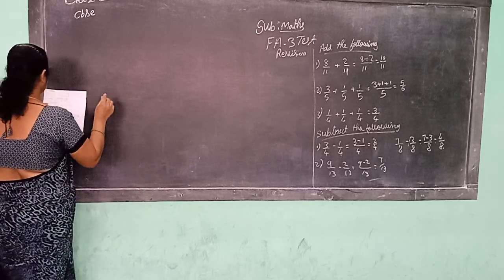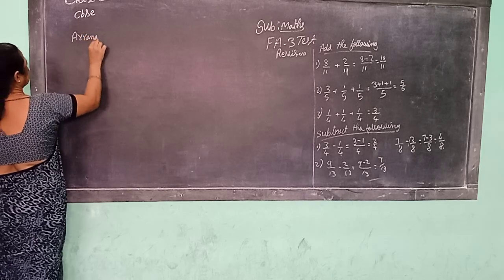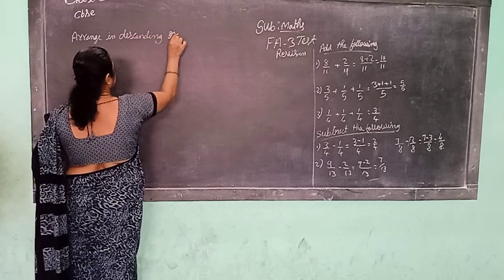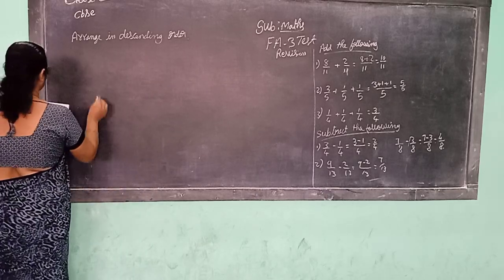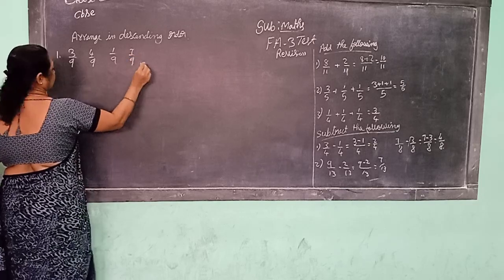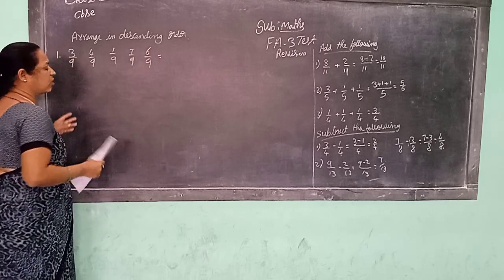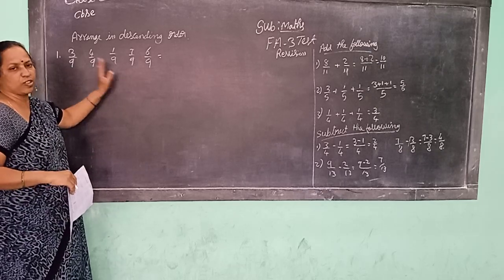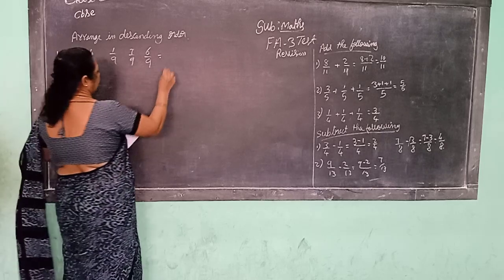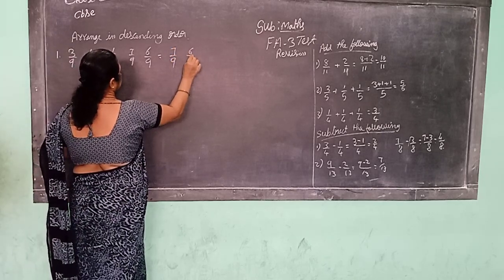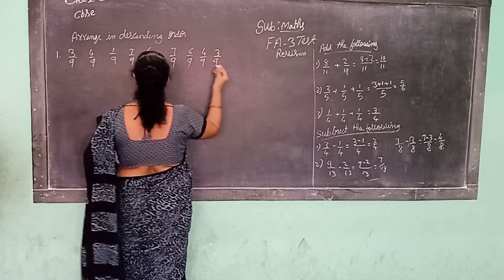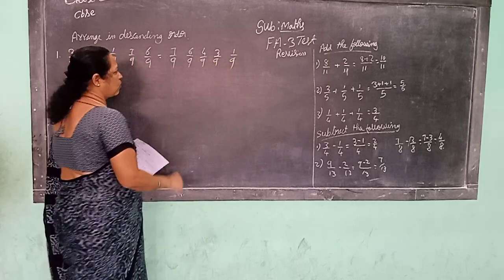Next is arranging in descending order. Descending order means big number to small number. So descending order is bigger number to smaller number. Here denominators are the same, so the numerator which is greater is the greater fraction. The numerators are 3, 4, 1, 7, 6. Which is greater? 7.